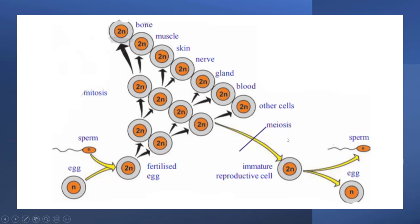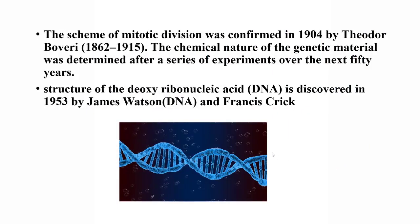If meiosis did not occur, a 2N reproductive cell would divide into two 2N cells. When those two 2N cells fuse, a 4N zygote would be formed. So it is only because of meiosis that the chromosome number is reduced to half, and that is very, very important. That is why the chromosome number is reduced to half in our body.